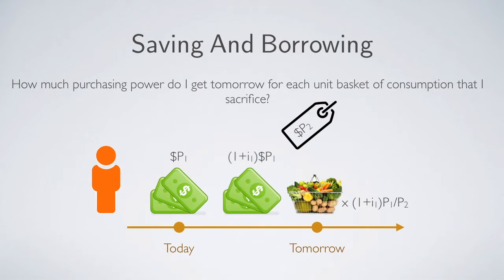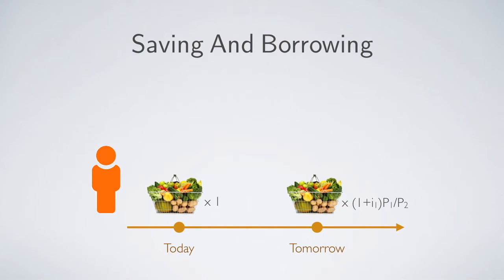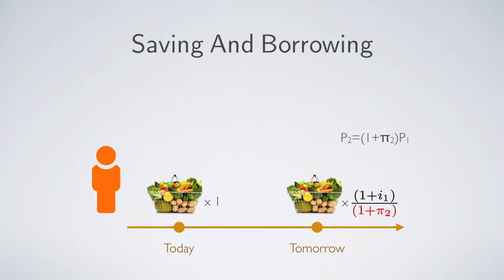Answering the question: sacrificing one unit of basket today yields (1 + I1)×P1/P2 units of consumption tomorrow. Because the price can change, there will be an inflation rate. We denote the inflation rate as Pi2, representing inflation from today to tomorrow. We can change P2 to (1 + Pi2)×P1, then cancel out all the P1. Using the approximation, this division is approximately equal to 1 + I1 minus the inflation rate Pi2.